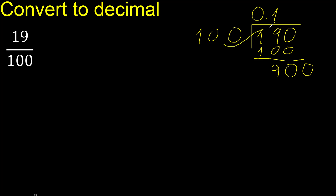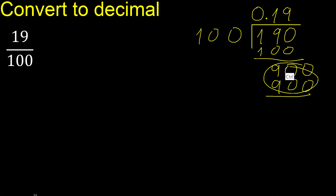100 multiply by which number is nearest to 900. Multiply by 9 is 900. Subtract: 0. Therefore finish.